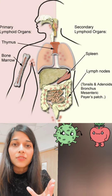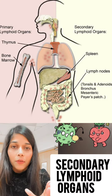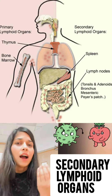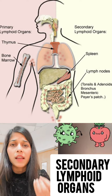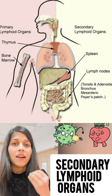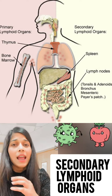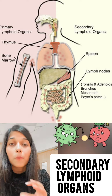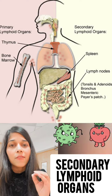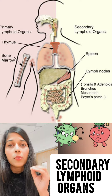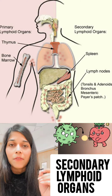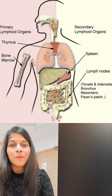Iske ilaava hamare paas secondary lymphoid organs hain — we have tonsils, we have spleen, we have lymph nodes, Peyer's patches. Everybody will contribute in the defense mechanism.